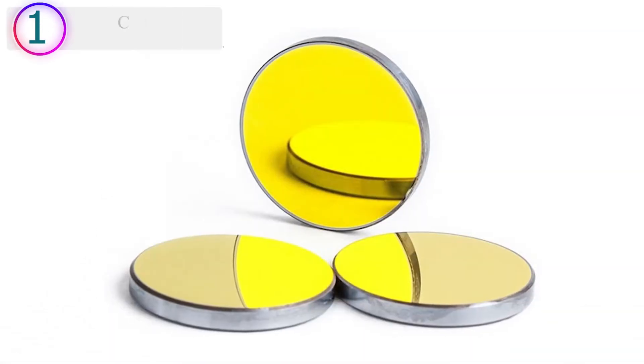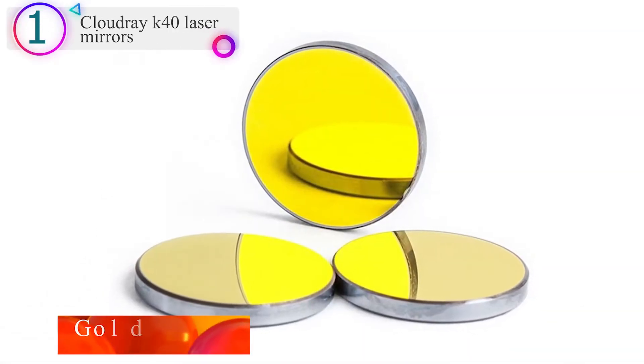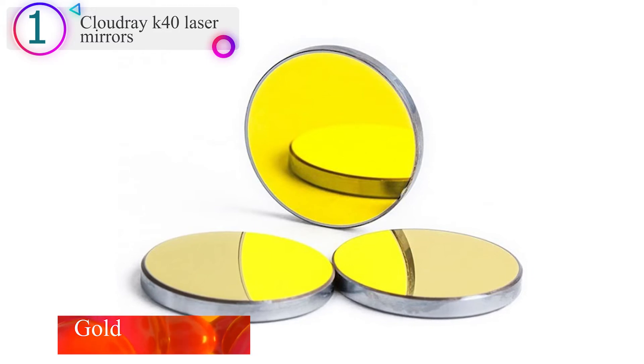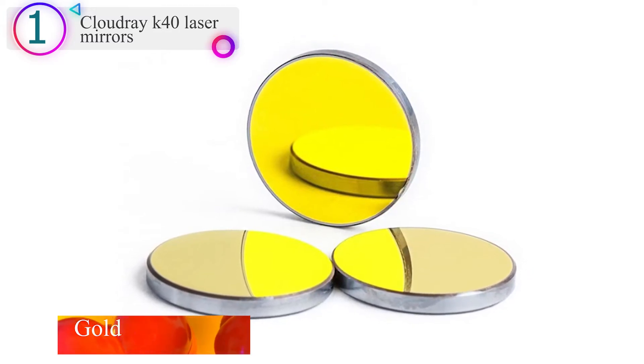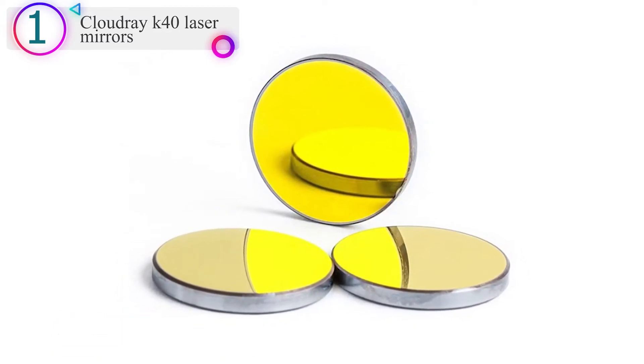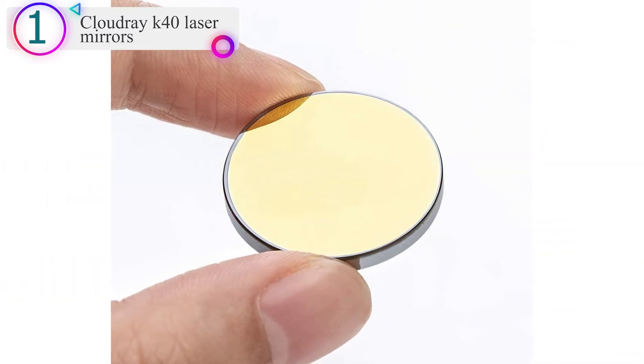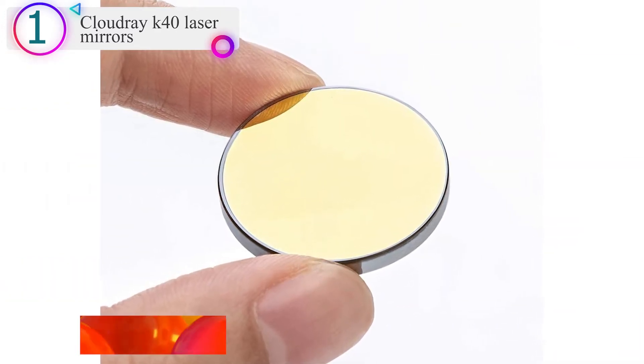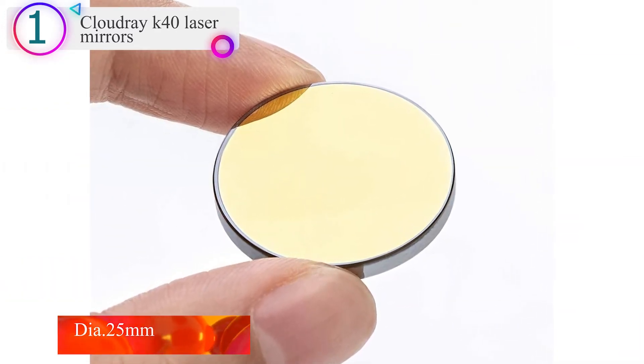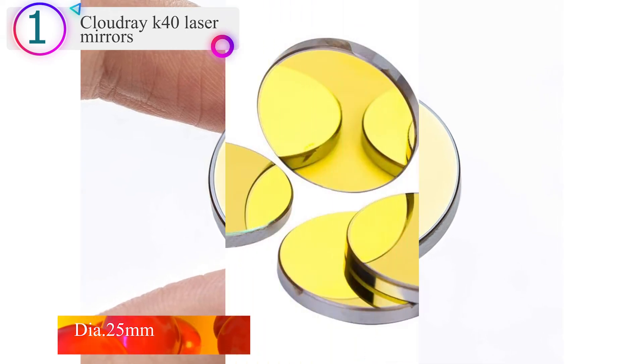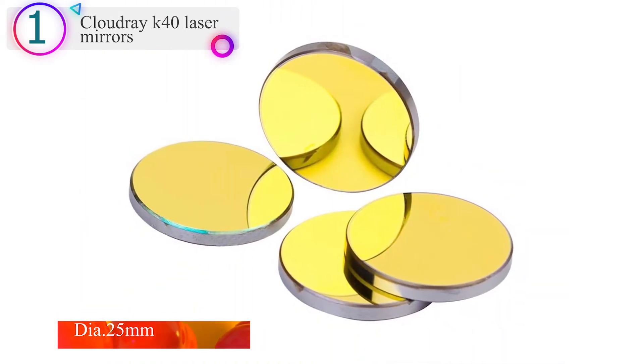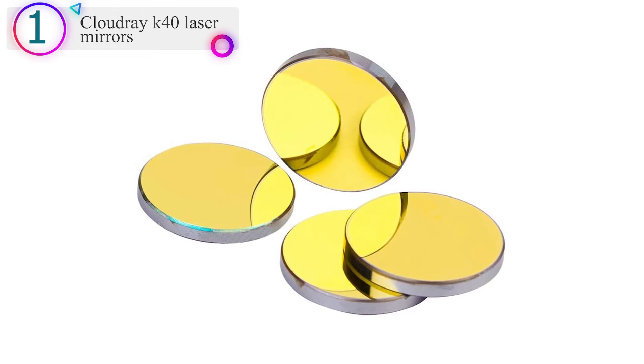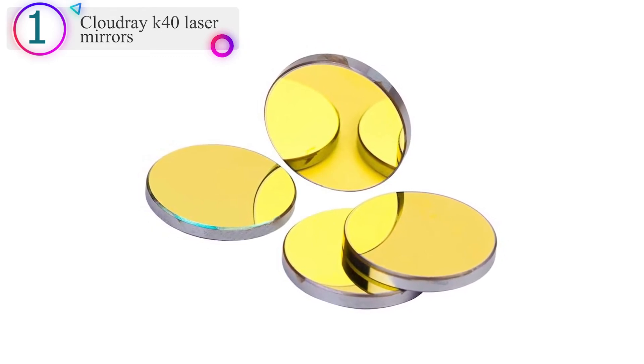In our list, the number 1 product name is Cloudray K40 Laser Mirrors. Material: gold-plated silicon. Wavelength: 10.6 μm. The reflection of Cloudray mirrors can reach up to 99.2%. Usage: replacement DIY part for CO2 laser engraving, cutting machine and CO2 laser head.